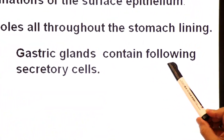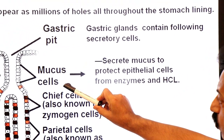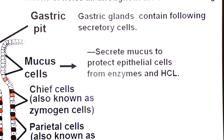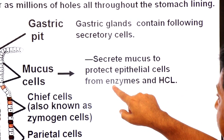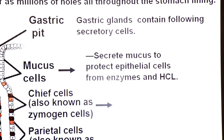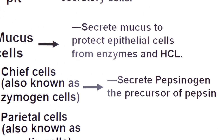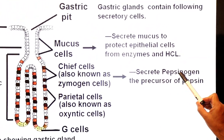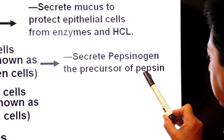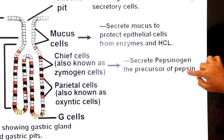Gastric glands contain the following secretory cells. Mucus cells secrete mucus to protect the epithelial cells — the mucus protects epithelial cells from attack by enzymes and hydrochloric acid. Chief cells, also known as zymogen cells, secrete pepsinogen — the inactive form of the enzyme and precursor of pepsin. HCL helps convert pepsinogen into pepsin.